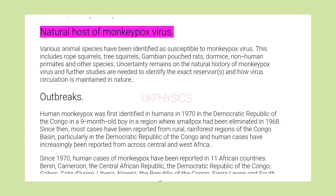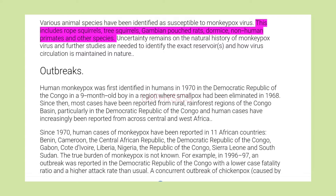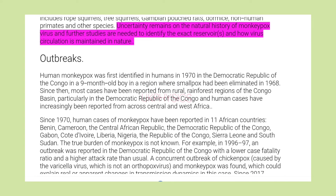Natural Host of Monkeypox Virus: Various animal species have been identified as susceptible to monkeypox virus. This includes rope squirrels, tree squirrels, Gambian pouched rats, dormice, non-human primates and other species. Uncertainty remains on the natural history of monkeypox virus and further studies are needed to identify the exact reservoirs and how virus circulation is maintained in nature.